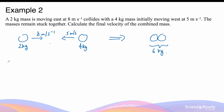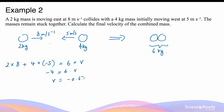By the law of conservation of momentum, the momentum before the collision — 2 kg × 8 m/s plus 4 kg × (−5 m/s) — equals the combined mass of 6 kg multiplied by the final velocity v. This gives −4 = 6v, so v = −0.67 m/s. Because the final velocity is negative, the combined mass is heading to the left at 0.67 m/s after the collision.